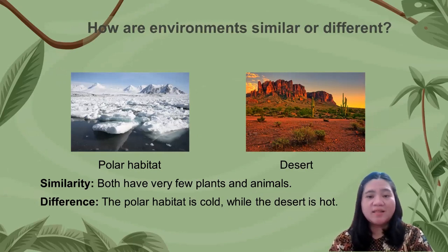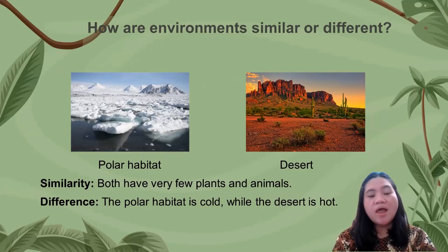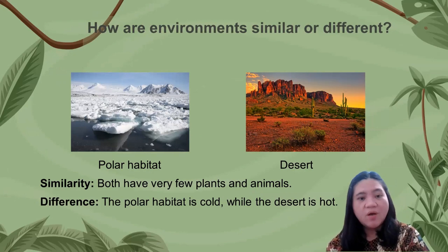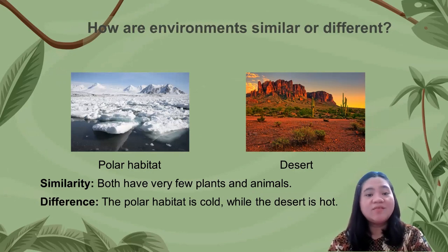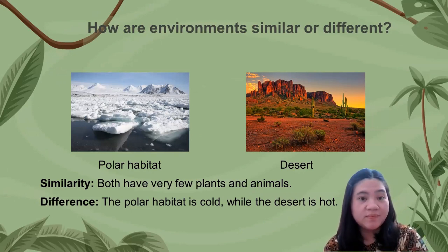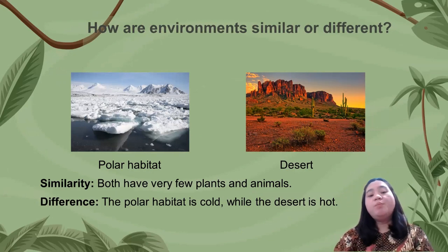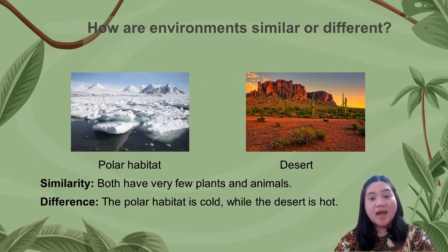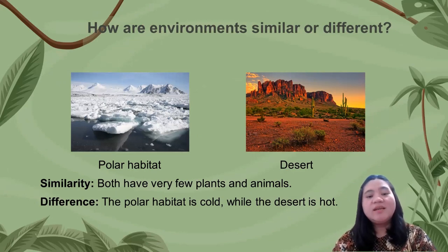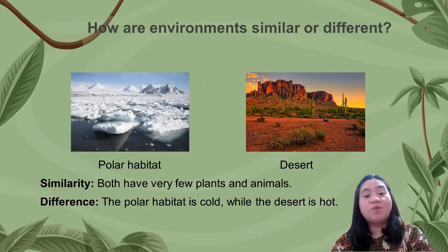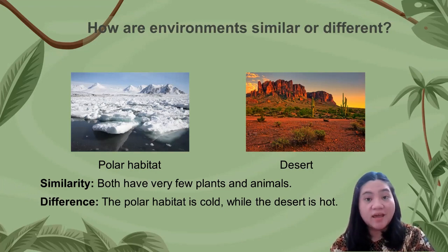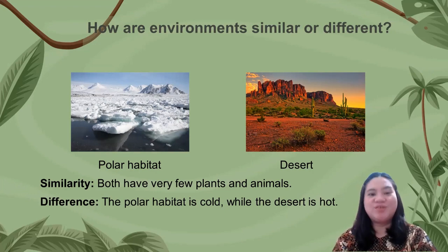Let's look at the pictures. The polar habitat and the desert — what is the similarity and what is the difference? Both have very few plants and animals. The difference is that the polar habitat is cold, while the desert is hot.